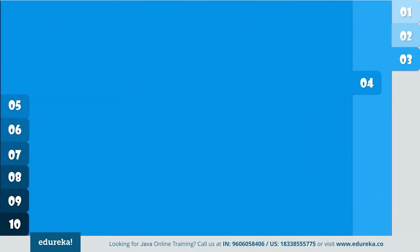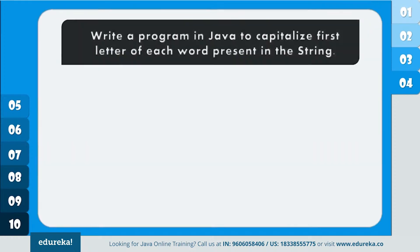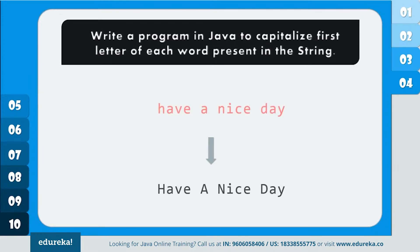Now let's move further and understand the next program. The problem statement is: write a program in Java to capitalize the first letter of each word present in the string. In this example, we have to capitalize the first letter of each word separated by a space. Let's see how to do that with the help of a code.